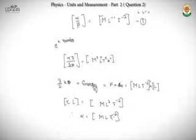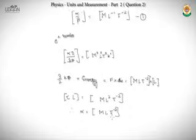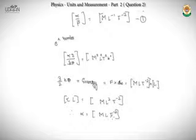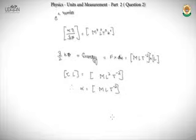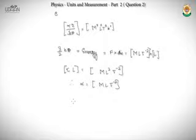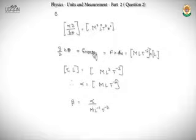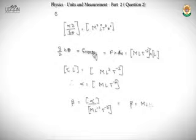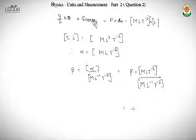Now we know α = MLT⁻². Using the first relation α/β = ML⁻¹T⁻², we solve for β: β = α / (ML⁻¹T⁻²) = MLT⁻² / (ML⁻¹T⁻²) = L². So the dimension of β is L².